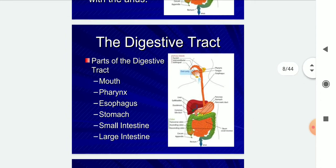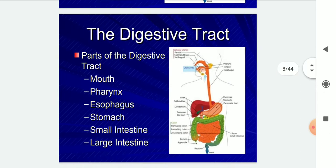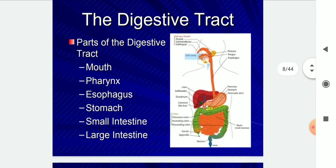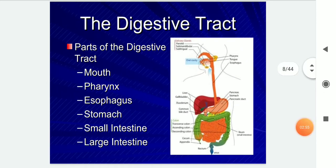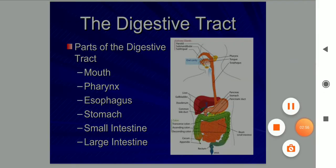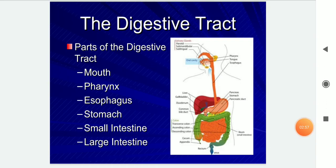The parts of the digestive tract are the mouth, pharynx, oesophagus, stomach, small intestine, and large intestine.